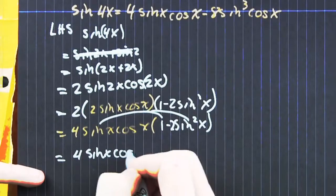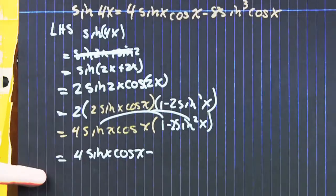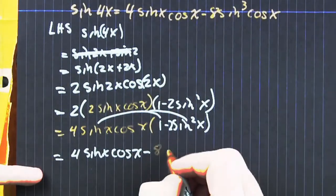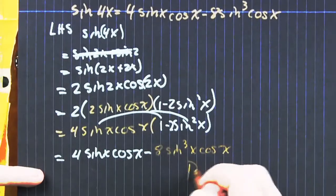To each one of those terms, making 4 sine x cos x minus 4 times 2 is 8. Sine times sine squared is sine to the third cosine x.